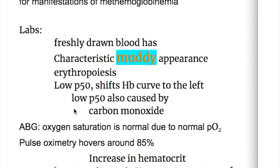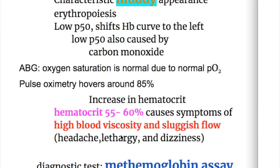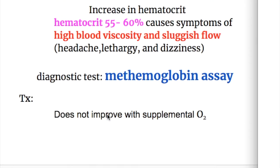Regarding arterial blood gas in methemoglobinemia: oxygen saturation is normal due to normal PO2, but pulse oximetry hovers around 85%. Regarding hematocrit in methemoglobinemia: there is increased hematocrit, and symptoms occur when hematocrit is more than 55 to 60%. There is high blood viscosity and sluggish flow, leading to headache, lethargy, and dizziness. The diagnostic test for methemoglobinemia is the methemoglobin assay.